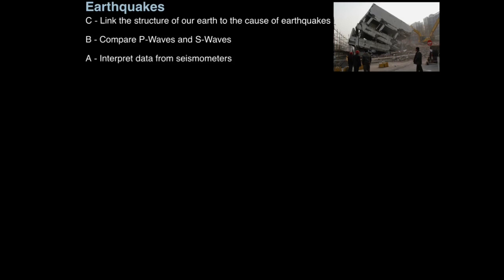This tutorial is on earthquakes. The first aim is to link the structure of our earth to the cause of earthquakes, then compare P waves and S waves, two types of waves emitted by earthquakes, and then interpret data from seismometers. These are pieces of equipment that detect tremors and display them graphically.